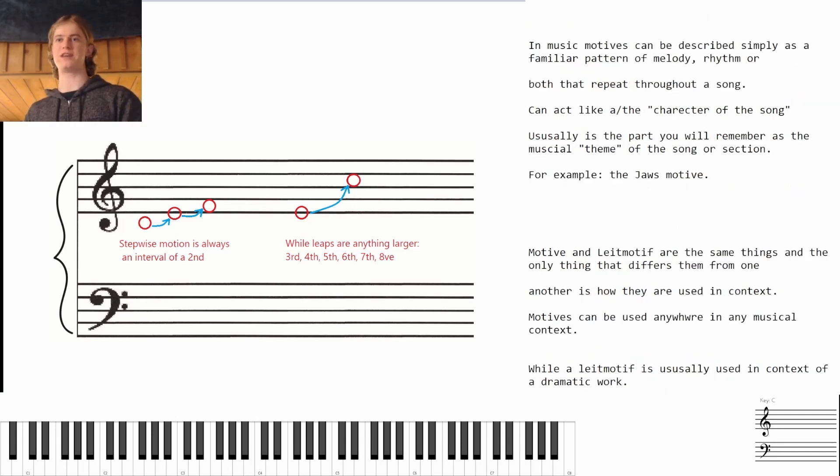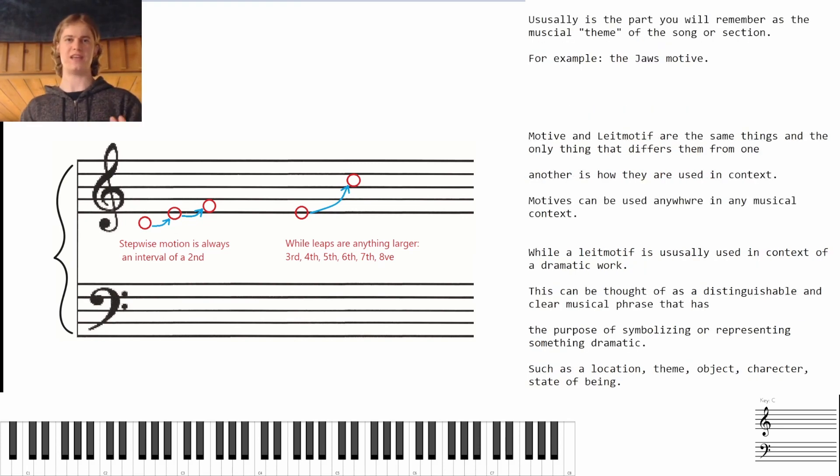In music, motives can be described simply as a familiar pattern of melody, rhythm, or both that repeat throughout a song. This can act like a or the character of the song. Usually, it is the part that you will remember as the musical theme of the song or section, something that you will be humming in your head or whistling after the song is over. For example, the Jaws motive.